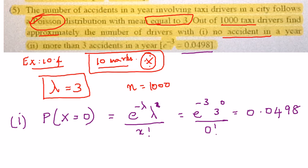So this is the probability of having no accident in a year. But the question what they are asking is, how many drivers, the number of drivers who will not have no accident in a year, who will not make any accident in a year. So then in that case, the number of drivers with no accident is going to be n into P of x equal to 0.